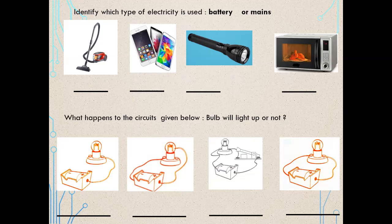The first picture is of a hoover — very good, we use mains electricity. What about the phone? Excellent, we use a battery. What about the torch or flashlight? Yes, we use a battery. What about the microwave? Excellent, children, you are doing wonderful — for a microwave we use mains electricity.